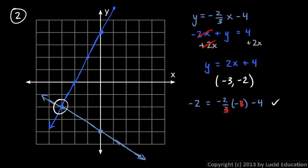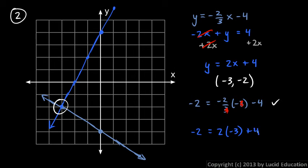And then the other equation, do the same thing — put in negative three for x and negative two for y. So negative two equals two times negative three plus four. And is that true? Well, this is negative two is equal to negative six plus four. And that is true. So that's the solution: negative three comma negative two.